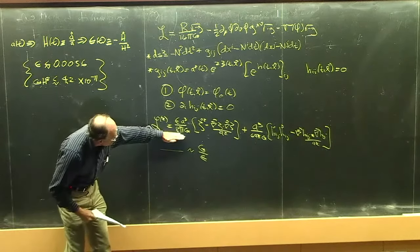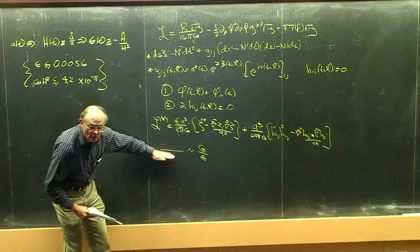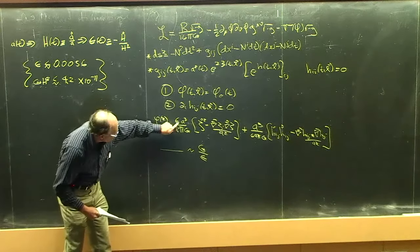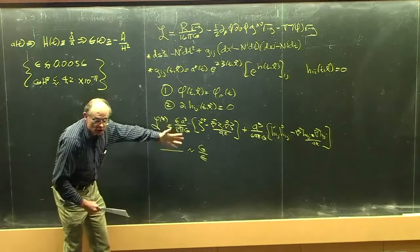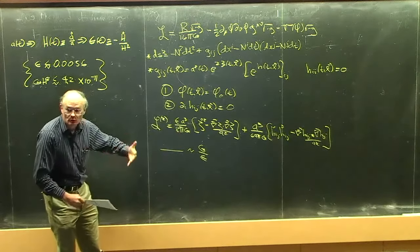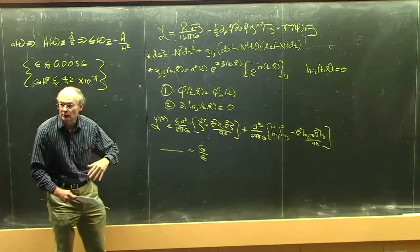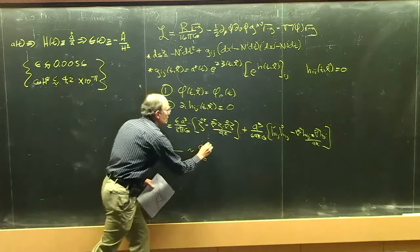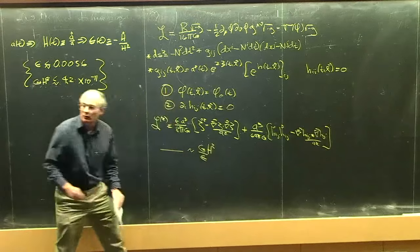Getting back to the quadratic Lagrangians, the Zeta-Zeta propagator has a factor of 1 over Epsilon in it. It's also dimensionful, and in cosmology, dimensionful factors always get resolved into factors of H. So this goes like G H-squared over Epsilon.